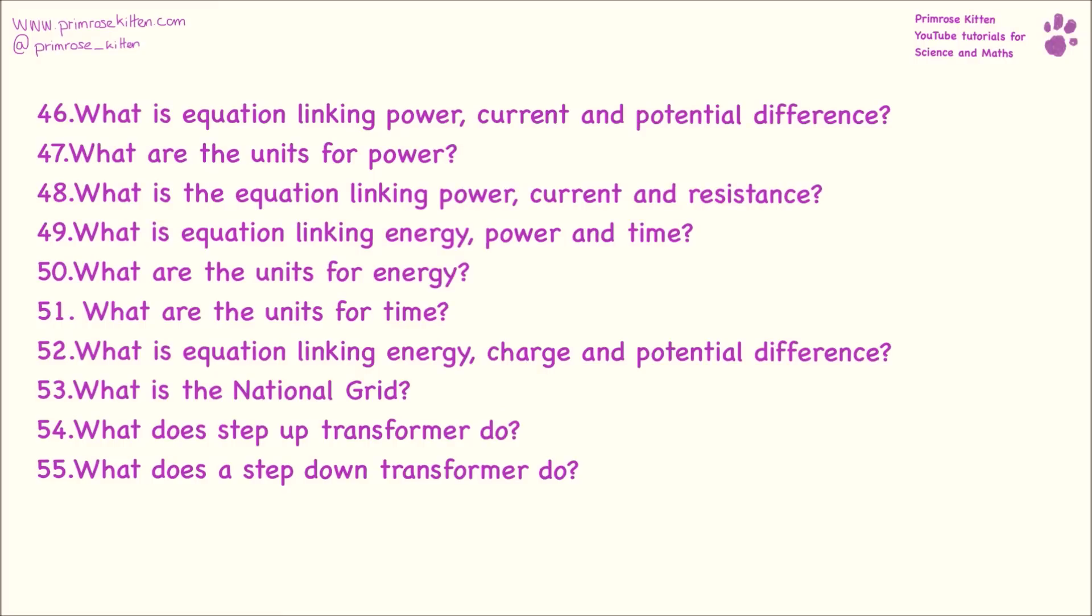What is the equation linking power, current and potential difference? Power equals potential difference times current. The units for power are watts. There is another equation linking power, current and resistance. Power equals current squared times resistance. The equation linking power, energy and time. Energy equals power times time. The units for energy are joules. The units for time are seconds.